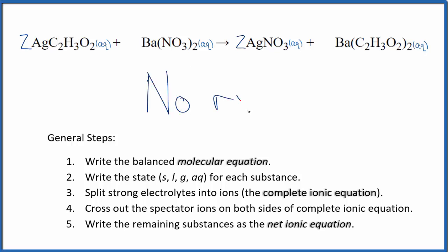We just say no reaction for this. And because of that, we can't really write a net ionic equation. All of the spectator ions would cross out and we'd be left with nothing. So for silver acetate plus barium nitrate, no reaction.